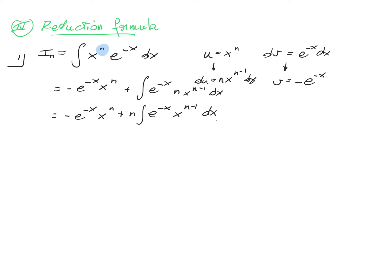We now see that this remaining integral is the same as the original but with power n minus 1 instead of n — so it equals i_{n-1}. The reduction formula is therefore: i_n equals minus e to the power minus x times x to the power n, plus n times i_{n-1}.